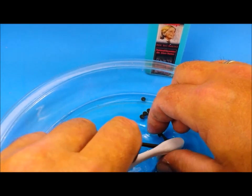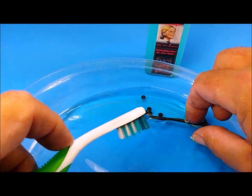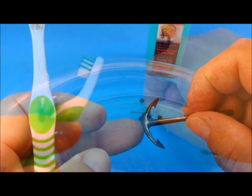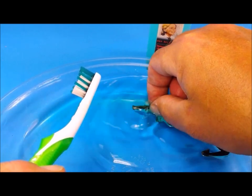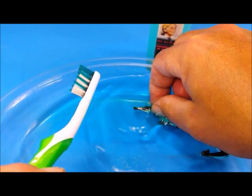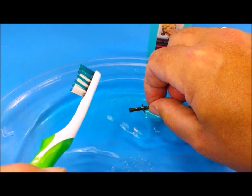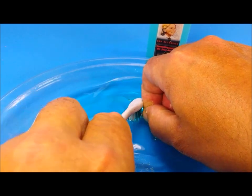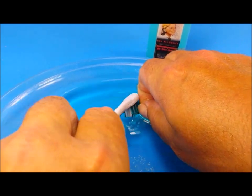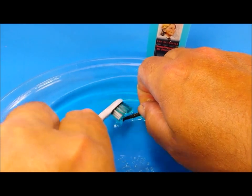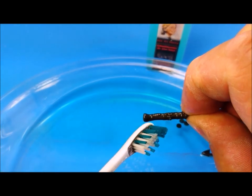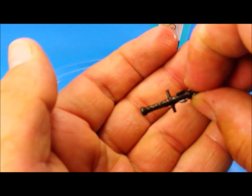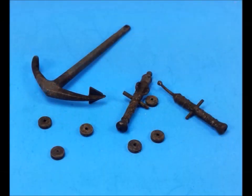The burnishing process is extremely fast. Within seconds after submerging the parts, they begin to turn black. The process can be sped up a little by giving the parts a light scrubbing with the toothbrush. With the metal parts blackened, now assembly of the cannons and the anchor can be done.